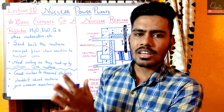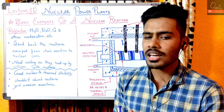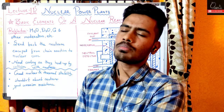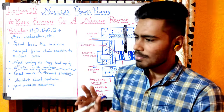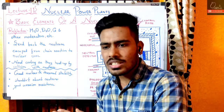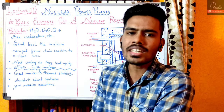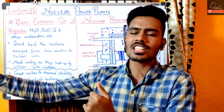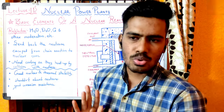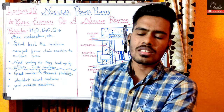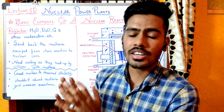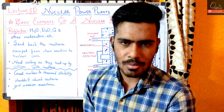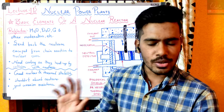Moderator जो था वो speed कम करने पर focus कर रहा था ताकि वो reactor की building को फाड़ के बाहर ना निकल जाए। But reflector जो है वह उन्हें फिर से nuclear core के अंदर भेज रहा है ताकि हमारी chain reaction की possibility हम increase कर सकें और हमारा chain reaction ज्यादा time तक continue चलता रहे, क्योंकि एक neutron की supply जितनी होती रहेगी तब तक chain reaction चलता रहेगा। Moderator और reflector की मदद से reactor का size about 50% से भी ज्यादा reduce हो जाता है। That's why they are very critical elements for any nuclear reactor।